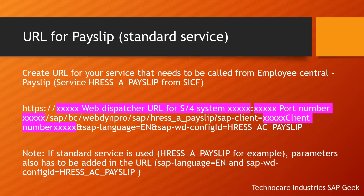For how to create URLs for Payslip, I will paste a sample URL into the description of the video so you can try it out on your own system. What you need to do for creating your own URL for Payslip is keep the non-highlighted part as it is and replace the highlighted part with your respective system details. For example, here you need to put the web dispatcher URL of the S4 system. If you don't know what the web dispatcher URL is, you can contact your basis team — they will expose the S4HANA system to the internet via web dispatcher and give you a URL that can be used for accessing your S4HANA system on any internet browser.